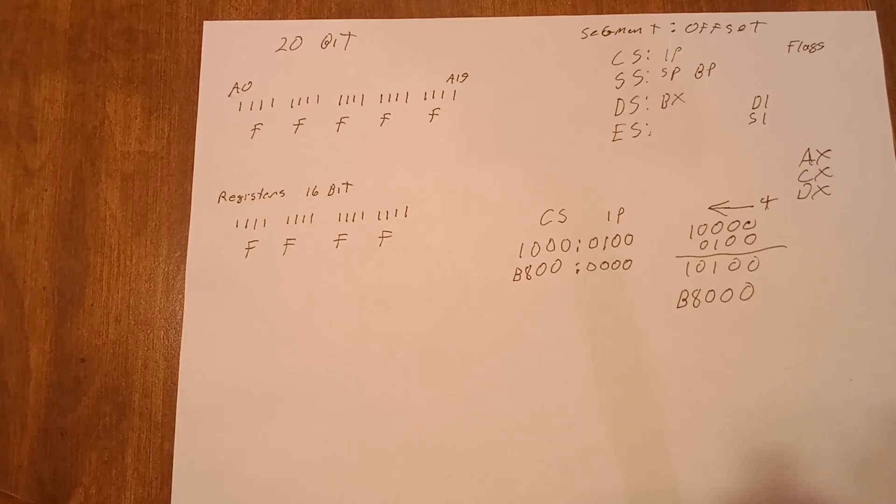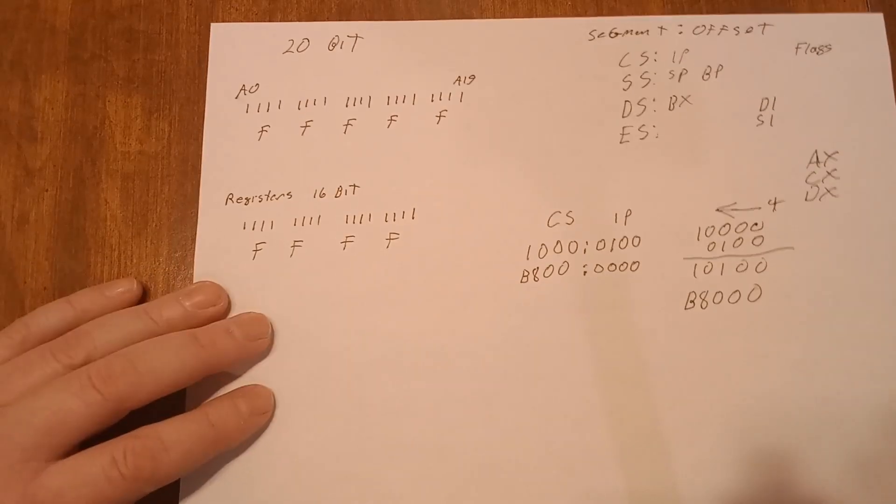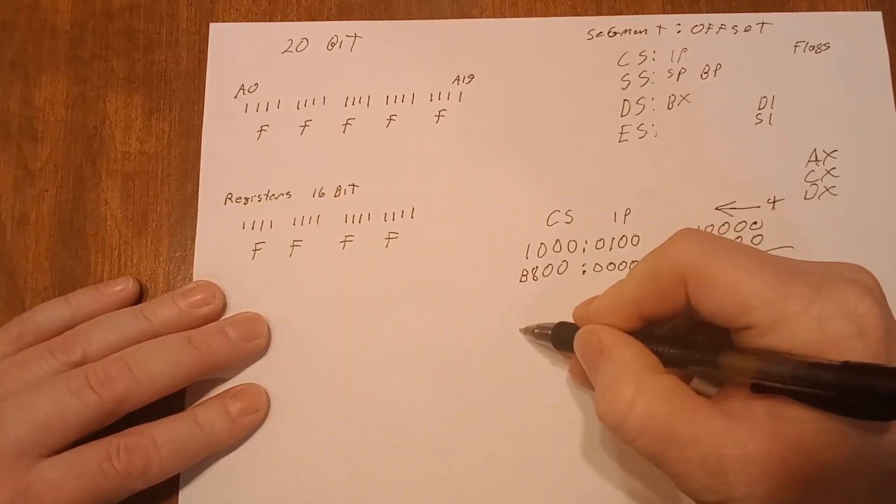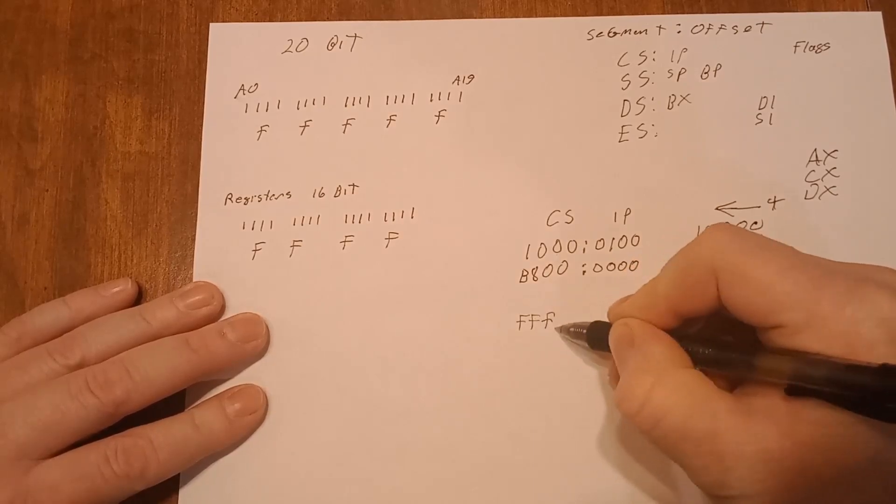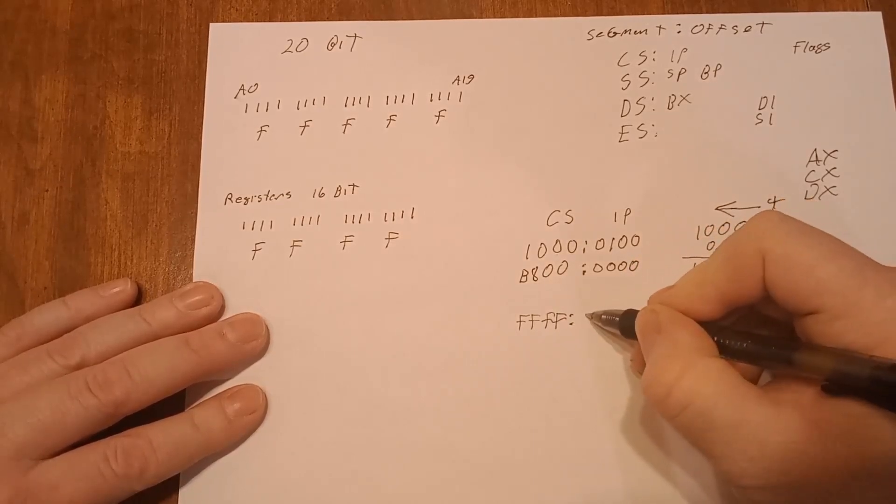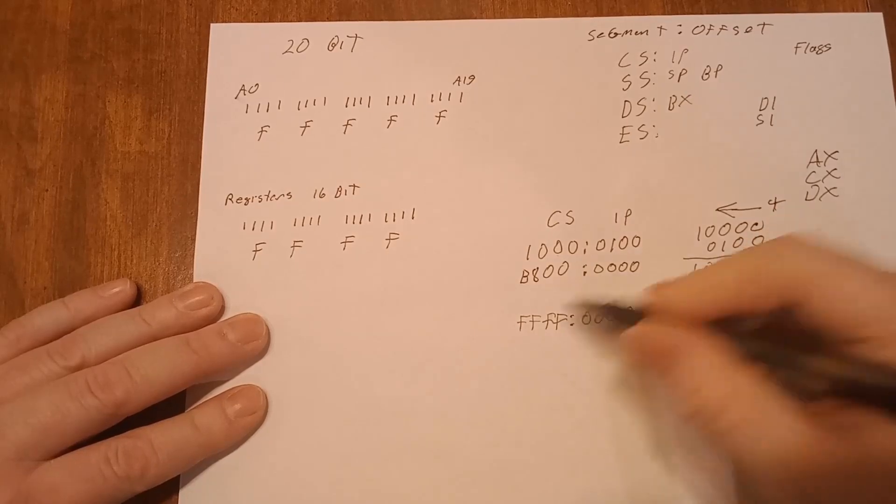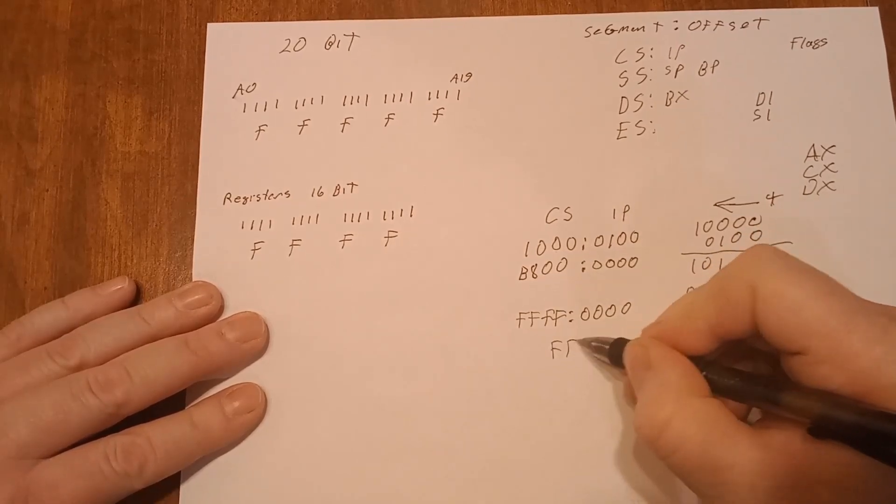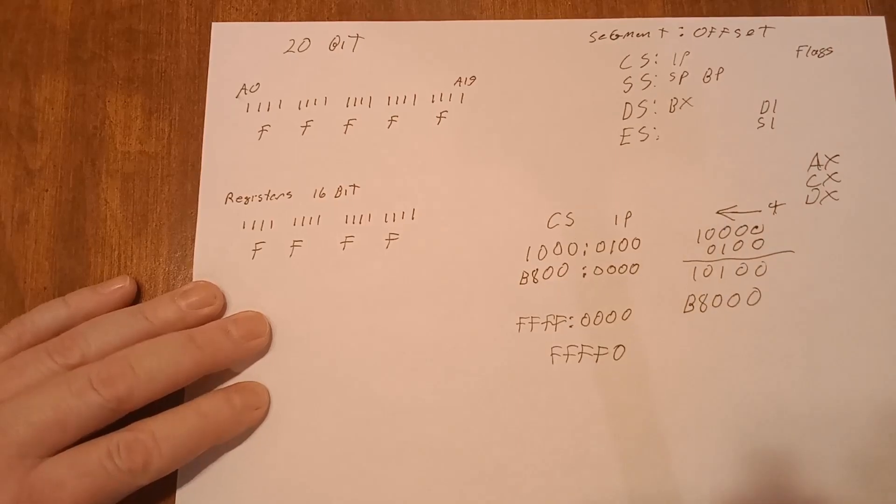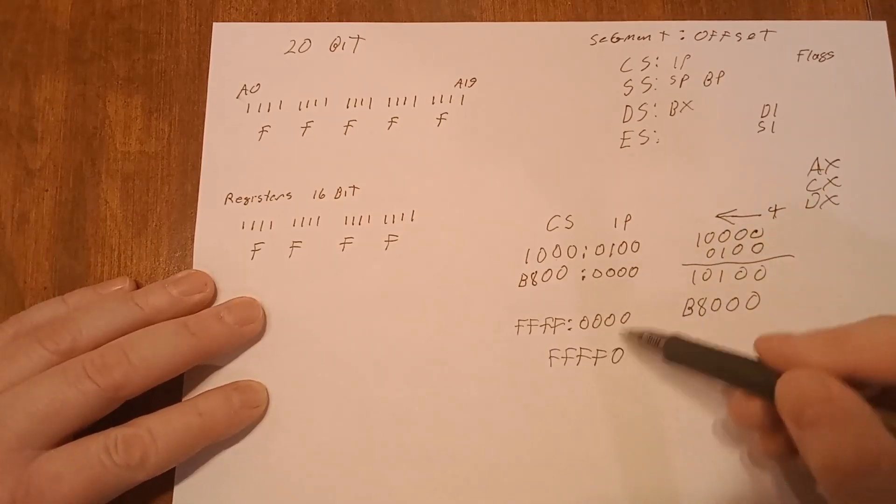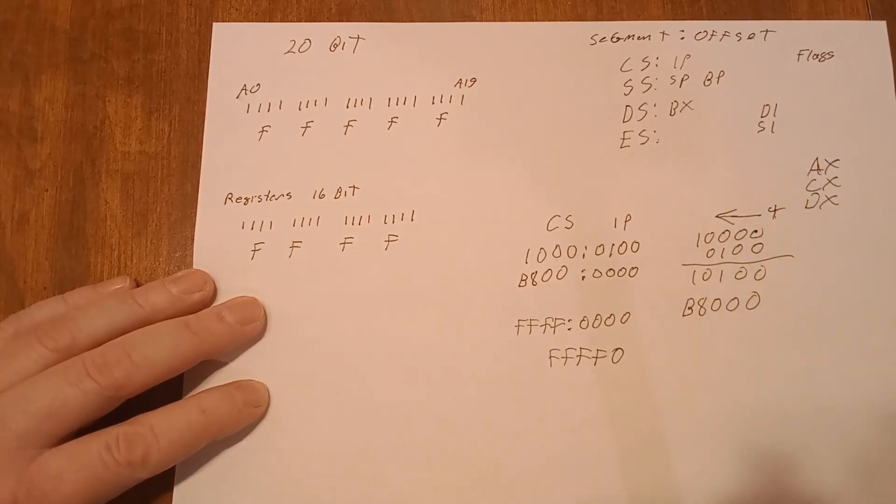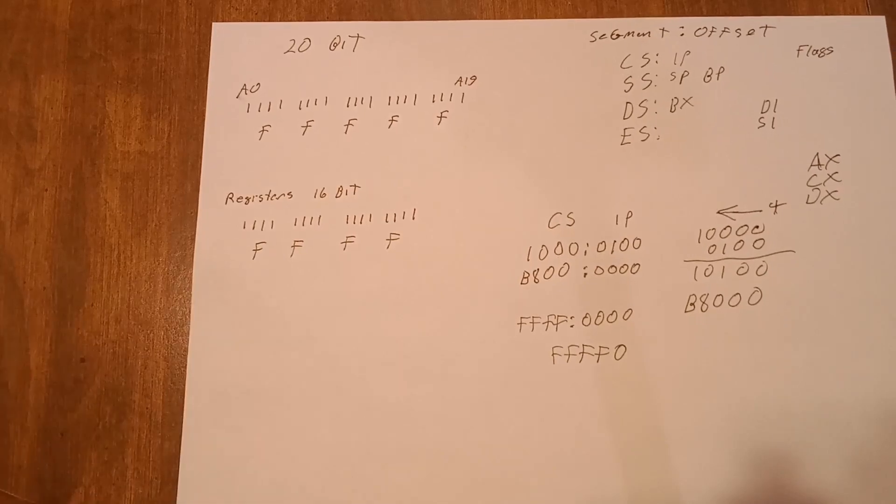So when your processor first starts up, your code segment will be F F F F and your instruction pointer is zero zero zero, which obviously equals F F F F F zero in what it adds up for your 20 bit address.